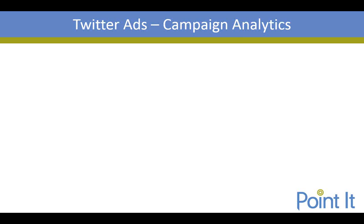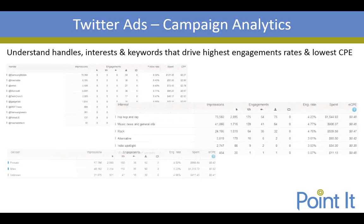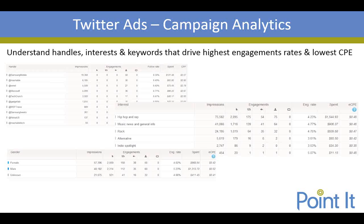Twitter analytics. There are two main areas you can look at. Campaign analytics help you understand which handles, interests, and keywords are driving the highest engagement rates as well as the lowest cost per engagement. A very recent update just in the past few weeks means Twitter now affords you visibility into pretty much all the data — all the handles, all the interests, keywords, genders, and engagement rates across each of those. Believe it or not, this was not the case until recently.